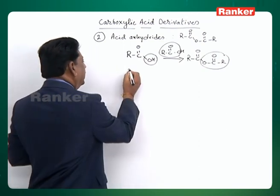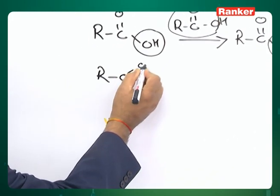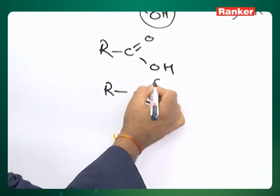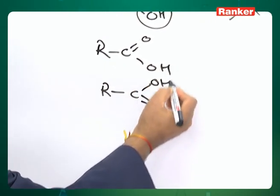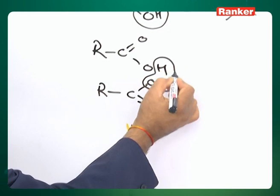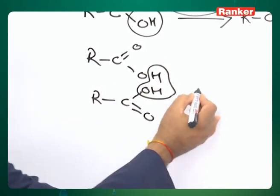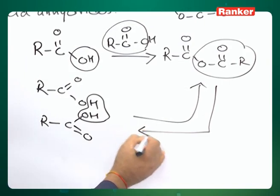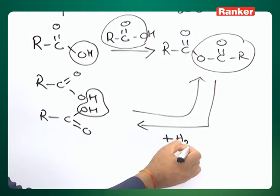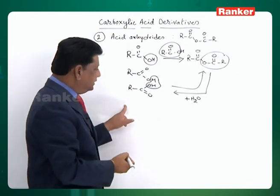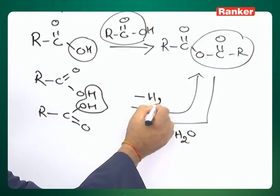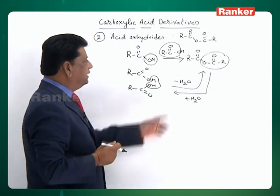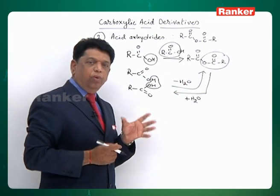You can also show it like this: if two carboxylic acids lose a water molecule, you get this compound. By adding water, anhydrides may be converted back to two carboxylic acids. Two carboxylic acids by removing the water give the anhydride. That's why this compound is called anhydride — it means no water.